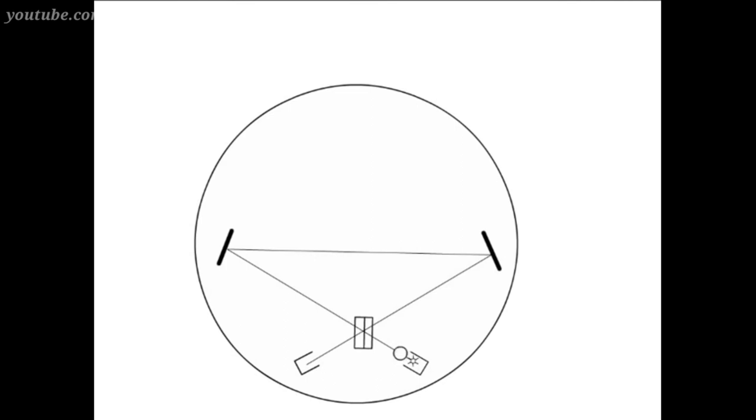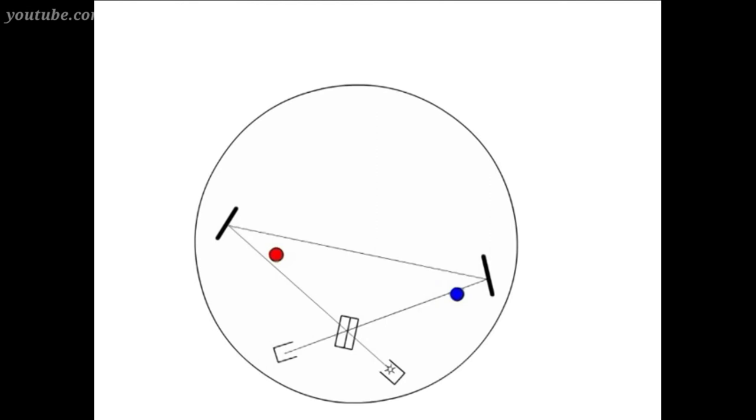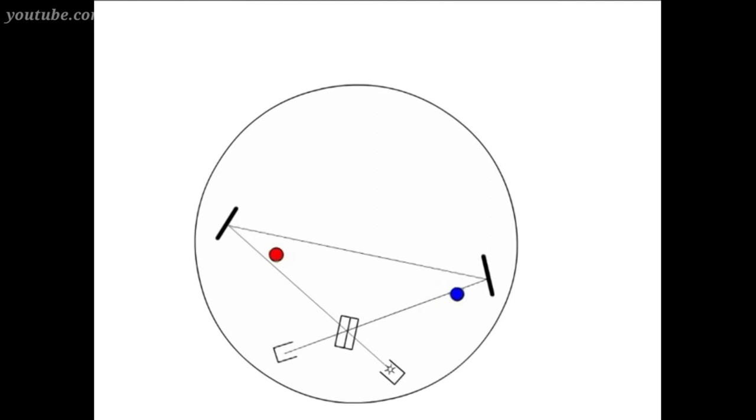According to him, the beam travelling around the loop in the direction of rotation will have further to go than the beam travelling counter to the direction of rotation. Because during the period of travel, the mirrors and the detectors will all move slightly towards the counter-rotating beam and away from the co-rotating beam.